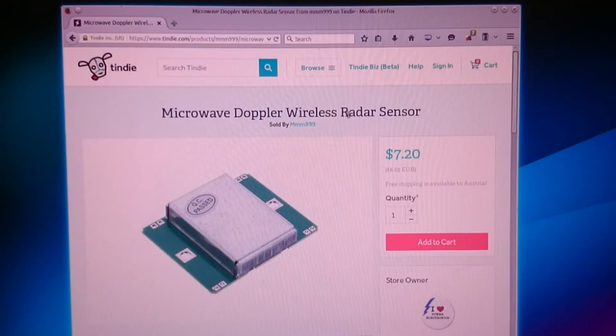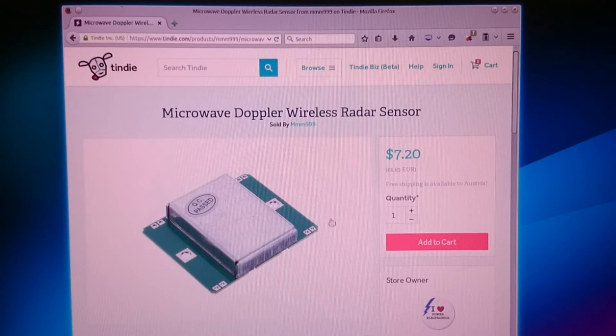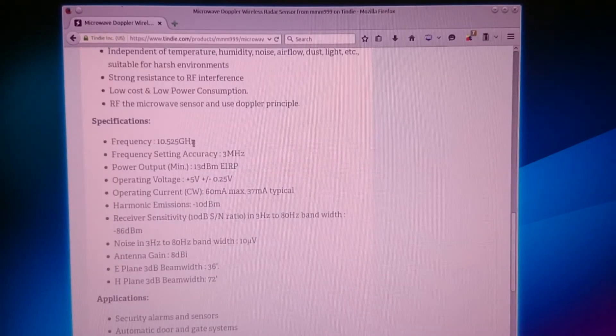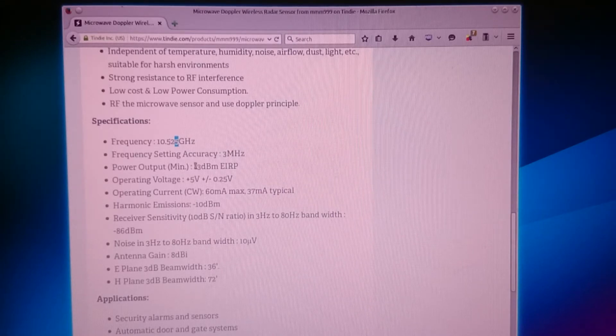The radar sensor I recently bought from Tindi. Its price is 7.2 US dollars. It's working at 10.525 gigahertz within the accuracy of 3 megahertz. The output power is 13 dBm, which is 20 milliwatts.